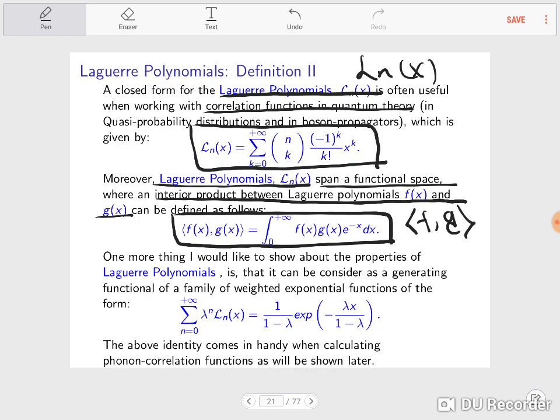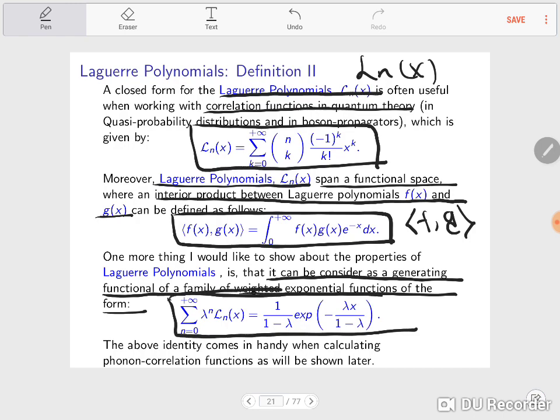Another important property of Laguerre polynomials is that they can be considered as a generating functional of a family of weighted exponential functions of this form. This very equation that you see here is going to be very useful when we simplify the phonon correlation function, or when we cast it in a more condensed form.